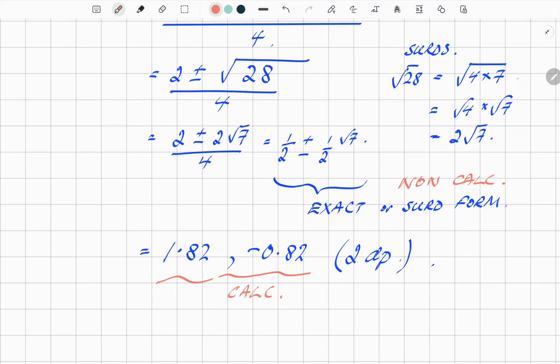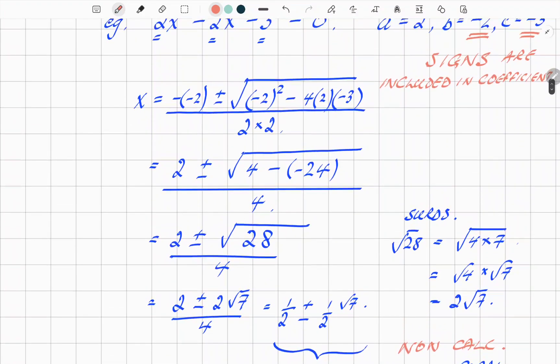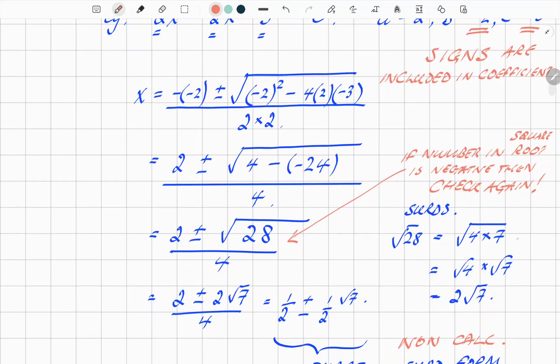So that's all there is to it, really nothing complicated. Just one thing to watch out for: if the number inside the square root, if that comes out to be negative, then check again. You might have made a mistake, because it should not be negative. And if it is negative, it can't be solved, because you can't square root a negative number, not as far as GCSE is concerned.